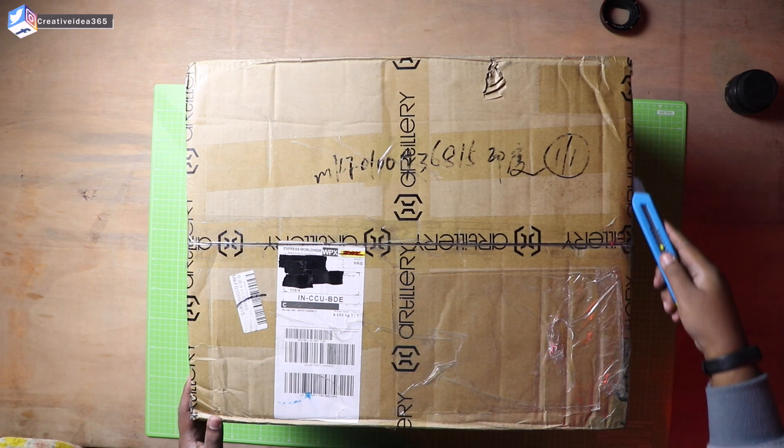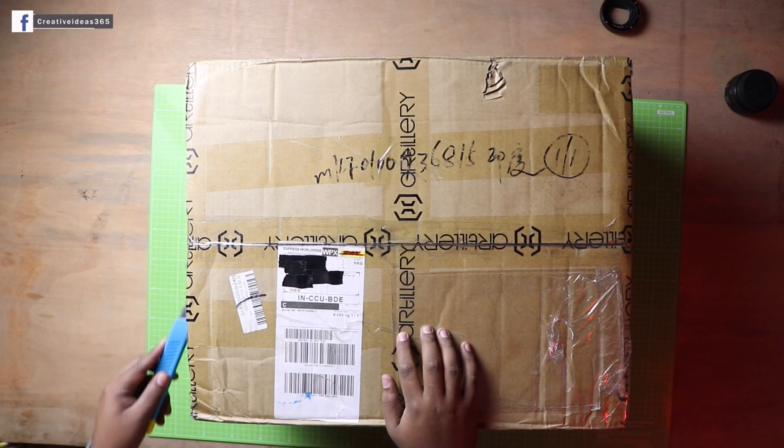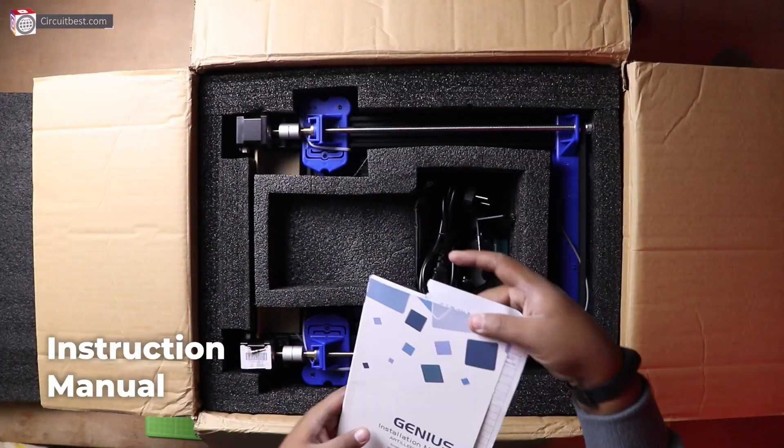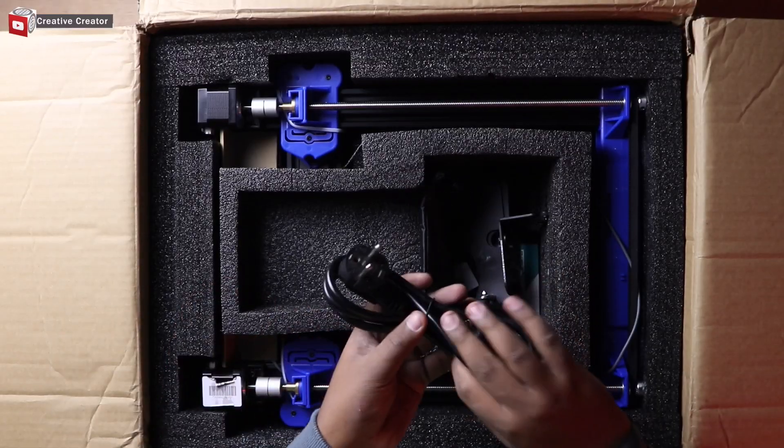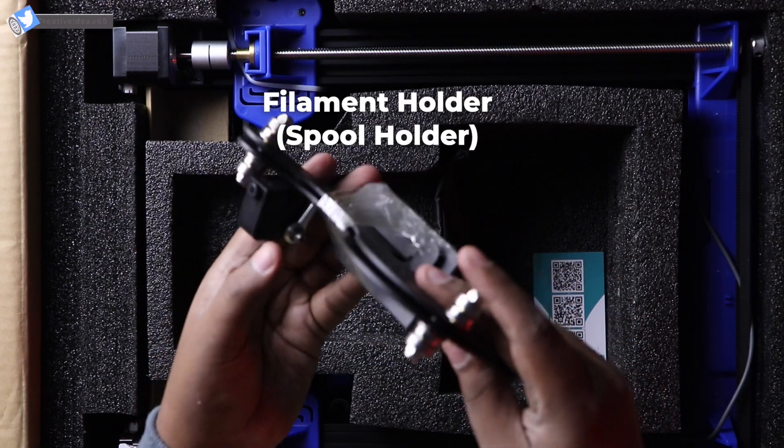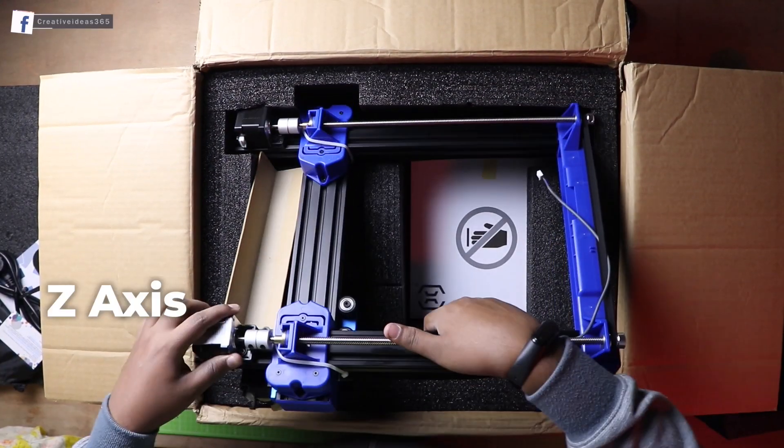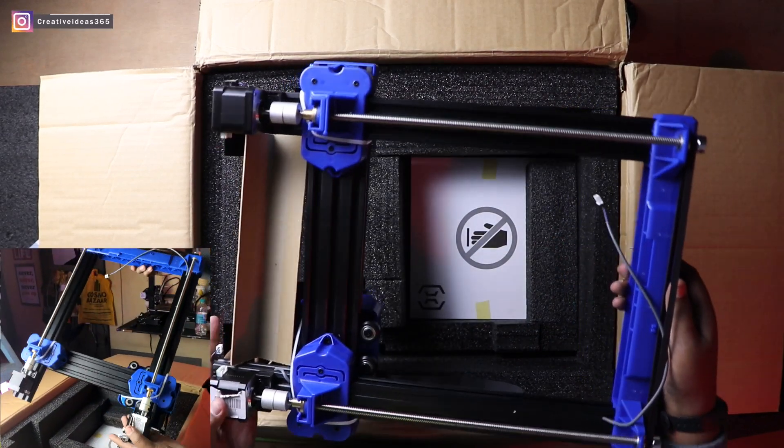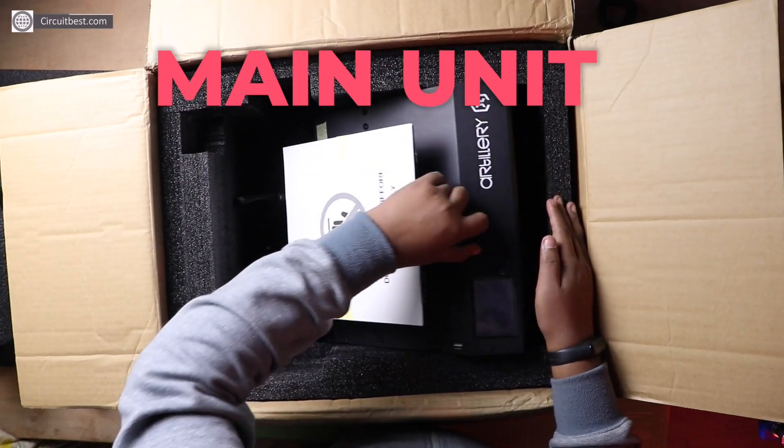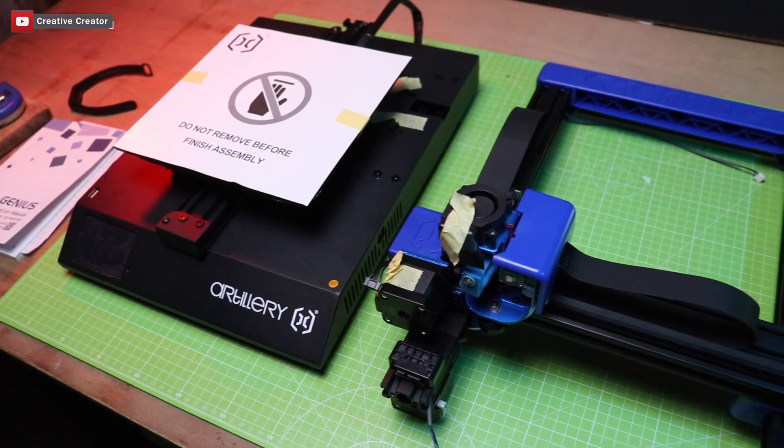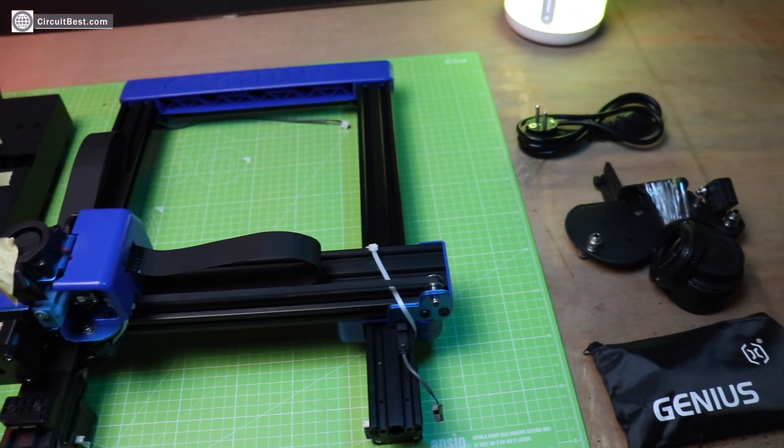Okay, so let's unbox the printer first and let's see what's inside it. These are all the items you will get inside the box.